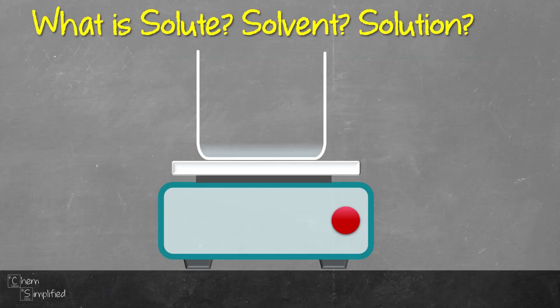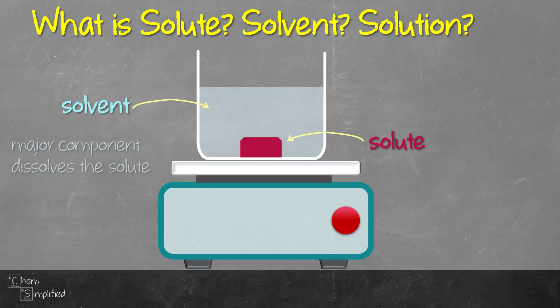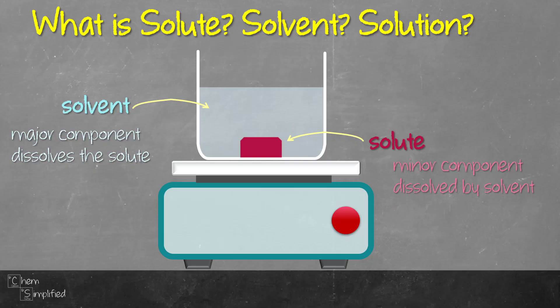Let's start off with a beaker of water. And then we add in a solid. In this example, the water is the solvent and then the solid is the solute. Solvent is present in larger quantity and it's responsible to dissolve the solute. Solute on the other hand is the smaller quantity and is dissolved by the solvent.